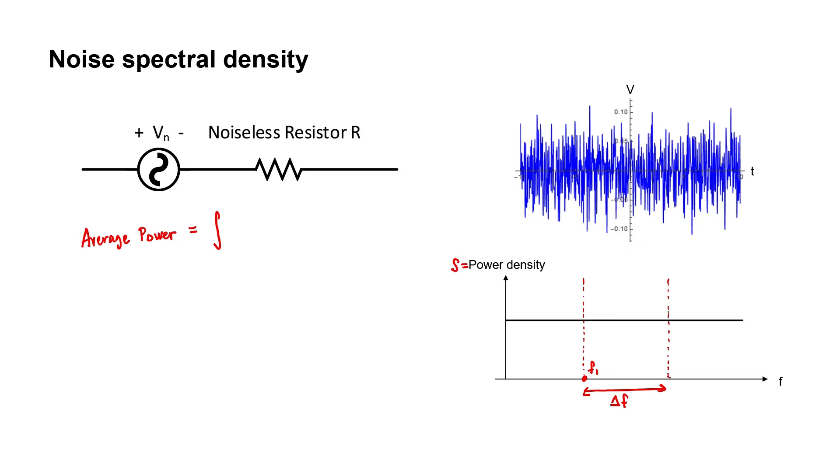If we call this point F1 and this point F2, then we just need to integrate between F1 and F2. This equation is true for all types of noise. And now you're going to see why I'm looking at white noise for this particular example. It's easy to make the integral, isn't it? Our power density is just flat. There's another expression for average power. That's V squared over R.